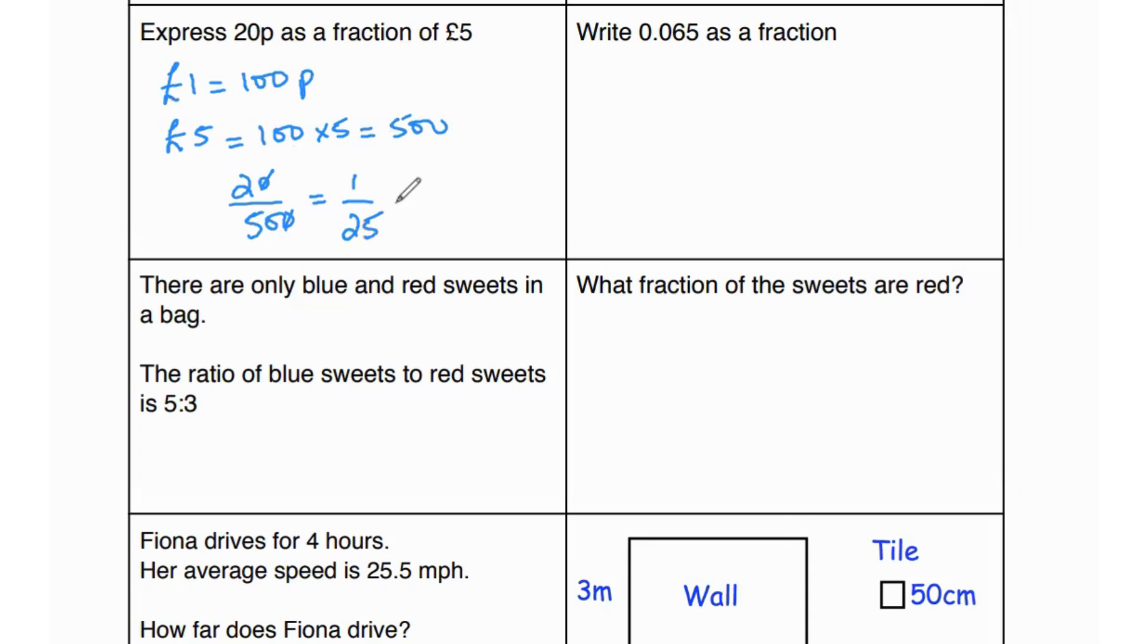In the next part it says write 0.065 as a fraction. 0.065 is basically 65 over 1000. Why? Because you move the decimal one, two, three places to the right. The number of places you move the decimal, that many zeros you add in the denominator. And the reason why it's thousand and not just three zeros, because every number has a denominator of one. Whether it's a whole number or a decimal. So with the one you attach the three zeros. So from one it turns into a thousand. So we have 65 over a thousand. And 65 over a thousand is simplified to 13 over 200.